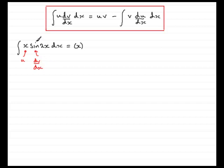So to get v, I've got to integrate sine 2x. So integrating sine 2x is going to give minus a half cosine 2x, or cos 2x for short. Then we have minus the integral of v.